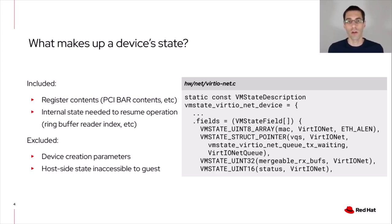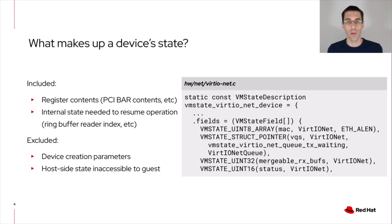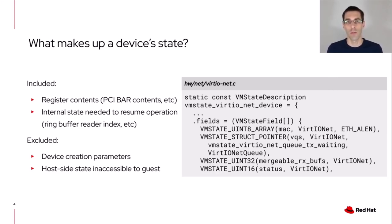One of the important questions is: what goes into the device's state? This includes the register contents of the device — basically anything that is guest-visible needs to go into the device's state. In addition, there might be some internal state that the device has that we really need in order to resume execution from where we left off. A good example is a ring buffer interface where the guest driver adds elements and the device consumes them. The device has a read index tracking the last request it processed. If we don't migrate that internal state, on the destination we won't know where we left off, and we may process some elements twice, which would be a problem.